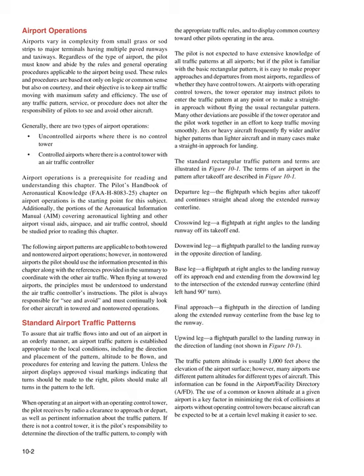Airport Operations is a prerequisite for reading and understanding this chapter. The Pilot's Handbook of Aeronautical Knowledge, FAAH 808325, chapter on Airport Operations is the starting point for this subject. Additionally, the portions of the Aeronautical Information Manual, AIM, covering aeronautical lighting and other airport visual aids, airspace, and air traffic control, should be studied prior to reading this chapter. The following airport patterns are applicable to both towered and non-towered airport operations. The pilot is always responsible for see-and-avoid and must continually look for other aircraft in both towered and non-towered operations.